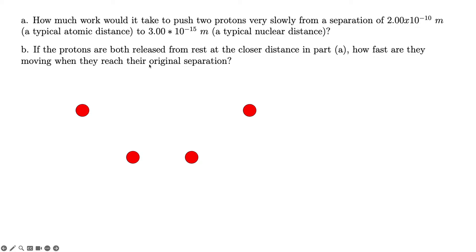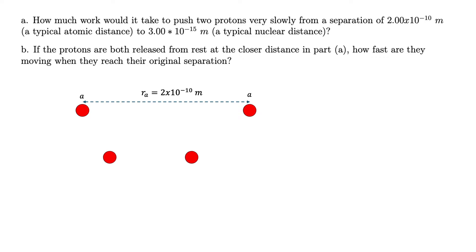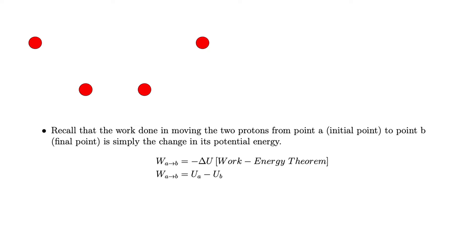To visualize this problem, you have two points — the red dots — initially at 2×10⁻¹⁰ meters, labeled as point A with distance R_A. We then force the protons to move closer to a distance R_B of 3×10⁻¹⁵ meters, labeled as point B. We are asked for the work done in moving the protons from point A to point B.